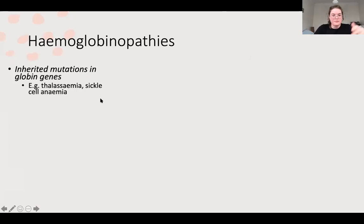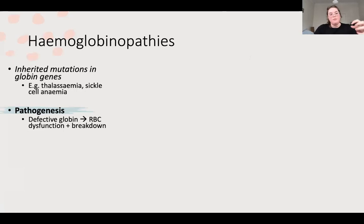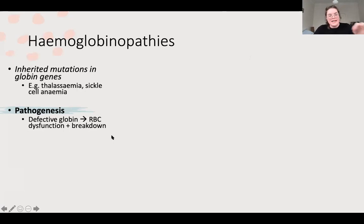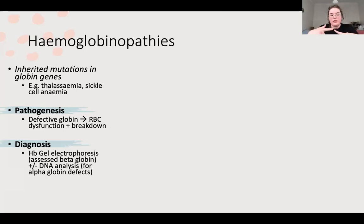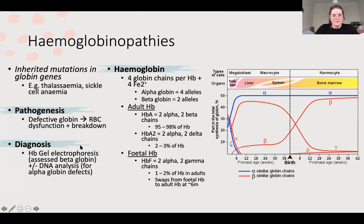The two haemoglobinopathies to know are thalassaemia and sickle cell disease. Because you've got that mutation, you don't make your haemoglobin as well. They can polymerise in chains rather than in a nice tetramer of four, so your red blood cell doesn't work and gets taken out of the system - you have an anaemia. It can technically be normocytic as well because they get lysed, but know it as part of a microcytic picture, though characteristic features will tell you even if it's normocytic.